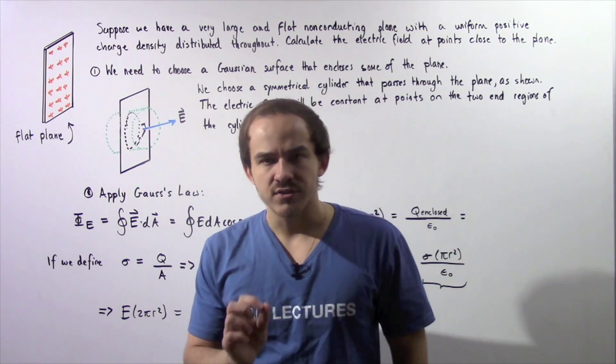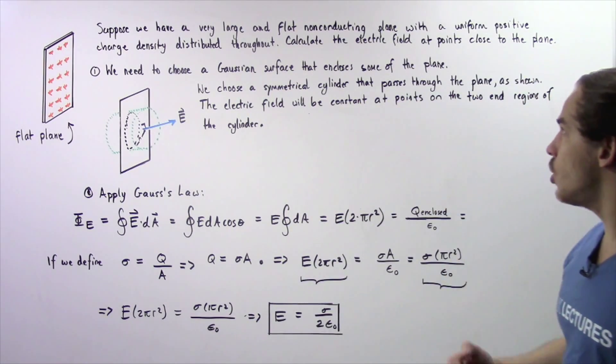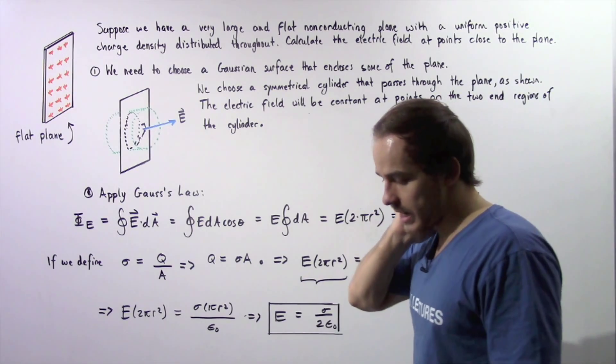In order to use Gauss's law we essentially have to choose a Gaussian surface that encloses some of this quantity of plane.